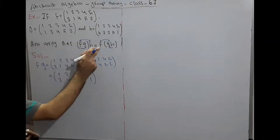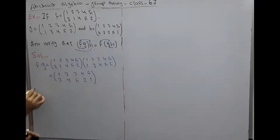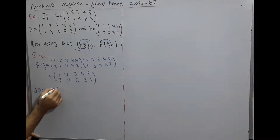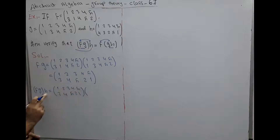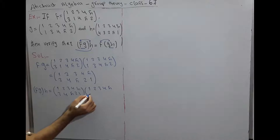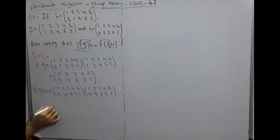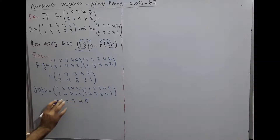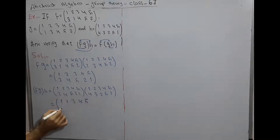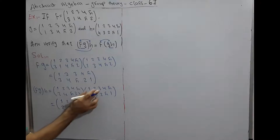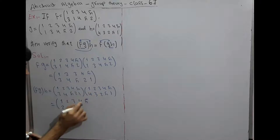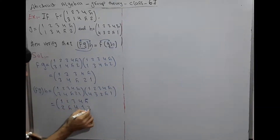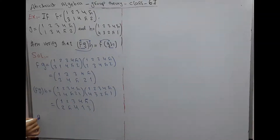Now we find the left side: (f∘g)∘h. We have f∘g = (1 2 3 4 5 / 3 4 5 2 1) into h = (1 2 3 4 5 / 4 3 2 5 1). Image of 1: f∘g gives 3, h of 3 is 2. Image of 2: f∘g gives 4, h of 4 is 5. Image of 3: f∘g gives 5, h of 5 is 1. Image of 4: f∘g gives 2, h of 2 is 3. Image of 5: f∘g gives 1, h of 1 is 4.